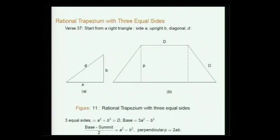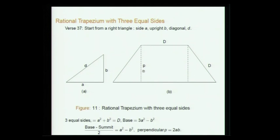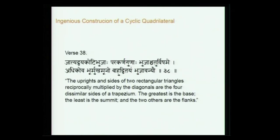A more non-trivial thing is a rational trapezium with three equal sides. Start with a triangle with side a, upright b, and diagonal d. The three equal sides are constructed as D = a²+b², and the other side is 3a²−b², and the difference between base and summit divided by 2 is a²−b². So the upright is 2ab, and the three equal sides are each a²+b².